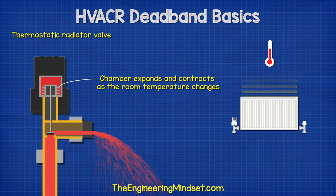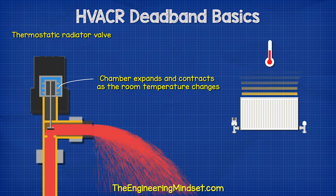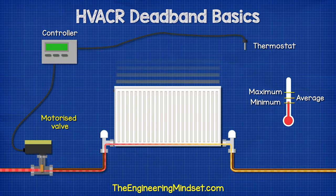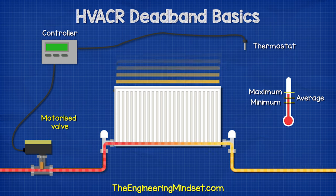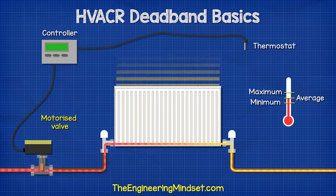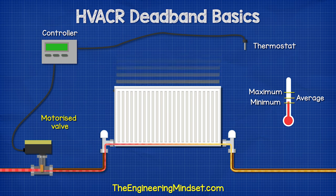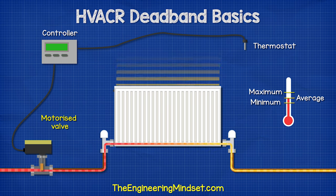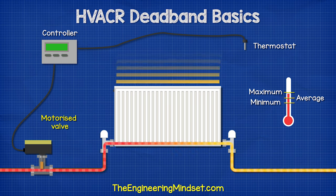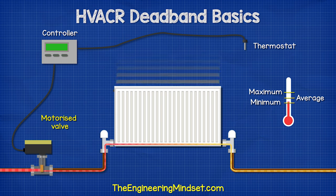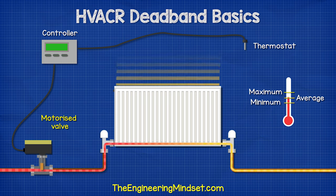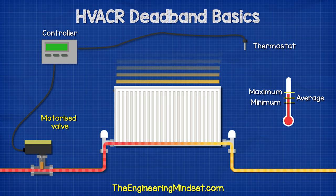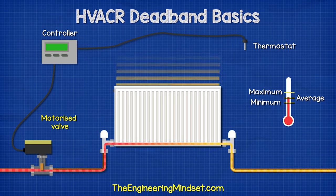The heat output of the radiator therefore matches the demand of the room. Alternatively, a radiator or fan coil unit could use a motorised valve controlled by a thermostat in the room. This will vary the flow rate of hot or cold water into the unit and vary the thermal output to match the demand.